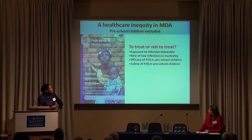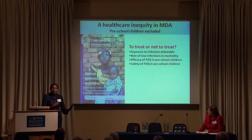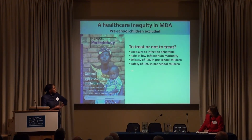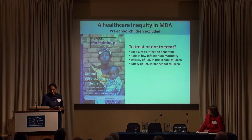The efficacy of Praziquantel in preschool children was also debatable because Praziquantel works in synergy with the immune system, and we were not clear whether these children could mount appropriate immune responses. Most importantly, the safety of Praziquantel was not tested in children aged four years and below — and therefore we couldn't prescribe this drug for mass drug administration in that age group.